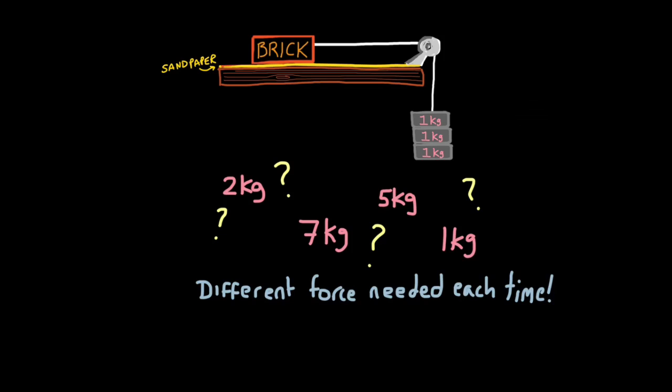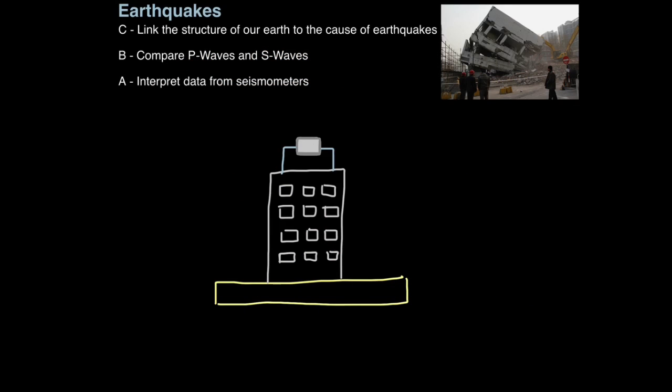Now predicting when the next earthquake is due for arrival is incredibly important. Because obviously earthquakes can lead to mass loss of life and property destruction. So it would hugely benefit us to have an accurate predicting method. Another thing we can do is look at the historic pattern of certain earthquakes and volcanic events. For example, some earthquakes happen fairly regularly. So we can use that previous pattern to predict future patterns. Again, it's not ideal because nothing's set in stone. As you can see, different forces needed each time. And that is how you link the structure of our Earth to the cause of earthquakes.